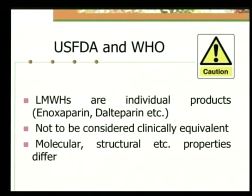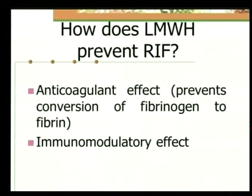The US FDA and WHO give a word of caution that the various low molecular weight heparins, like enoxaparin or dalteparin, should be considered as individual products and not considered clinically equivalent, as their molecular and structural properties differ. Coagulation in the body is a chain of events involving various protease enzymes, ultimately leading to the conversion of fibrinogen to fibrin. Heparin or low molecular weight heparin acts at many levels in this coagulation cascade, inhibiting the conversion of fibrinogen to fibrin and ultimately preventing clot formation.